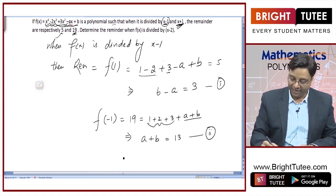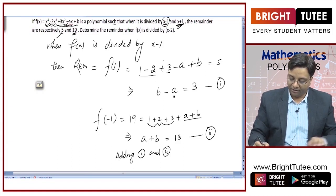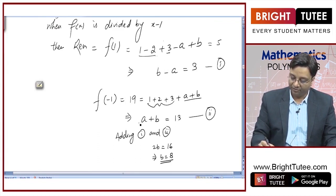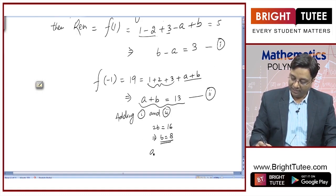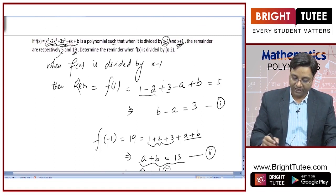Adding equations 1 and 2: b − a + a + b = 3 + 13, so 2b = 16, hence b = 8. Putting b = 8 into equation 1: 8 − a = 3, so a = 5. Therefore a = 5 and b = 8.